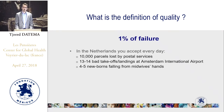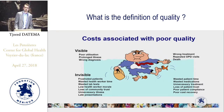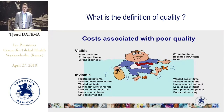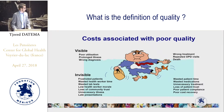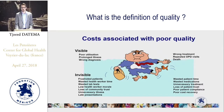So 1% of non-quality is not really acceptable when you talk about these kinds of things. When you look at poor quality, there are costs associated — both visible and invisible. For example: poor utilization, prolonged illness, wrong diagnosis, wrong treatment, repeated OPD visits, even death. And invisible costs include frustrated patients, wasted health worker time, wasted laboratory tests, low health worker morale, loss of community trust, unnecessary illness, late presentations, and wasted medications.